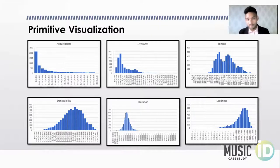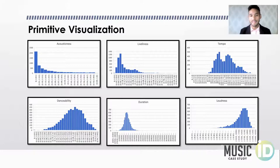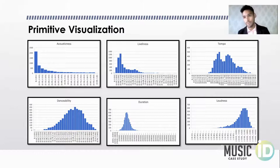Duration is pretty concentrated in one area. So if you want to have a song on the Billboard Hot 100, the likelihood of a 10-minute song ending up there is unlikely, as we can see here. Most songs that historically chart are within a very specific range.